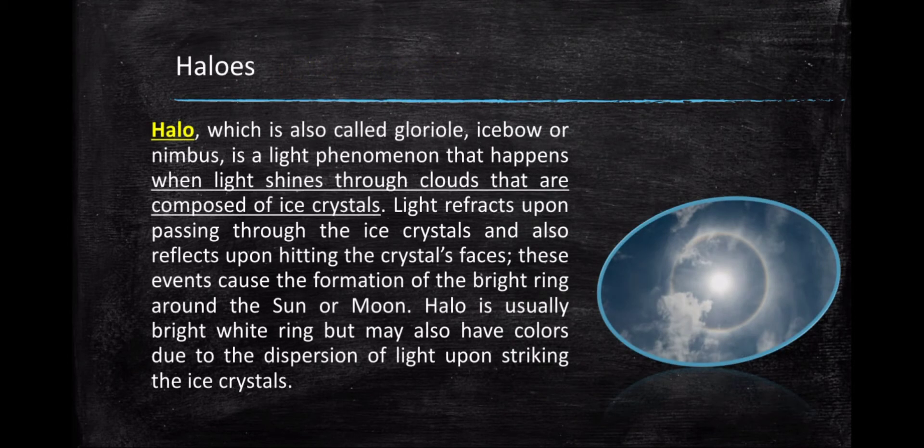Now, let's talk about halos. Halo, which is also called gloriole, ice bow, or nimbus, is a light phenomenon that happens when light shines through clouds that are composed of ice crystals. Light refracts upon passing through the ice crystals and also reflects upon hitting the crystals' faces.